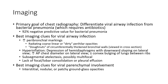In imaging, the primary goal of the chest radiograph is to differentiate viral parenchymal infection from bacterial pneumonia, which requires antibiotics. It has a 92% negative predictive value for bacterial pneumonia. The best imaging clue for viral parenchymal infection is increased peribronchial markings — radiating coarse linear or dirty hilar opacities that do not have a circumferential or secondary nodular component.